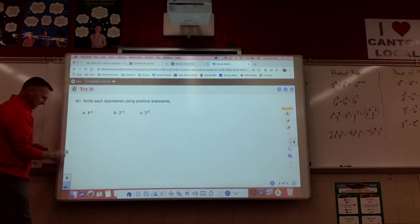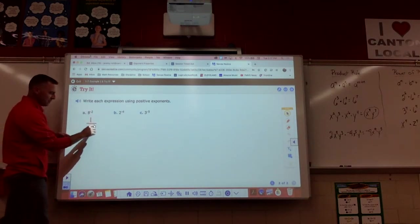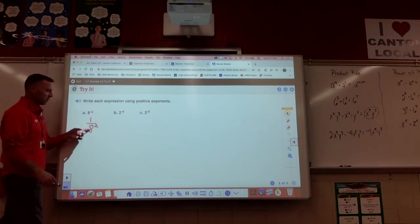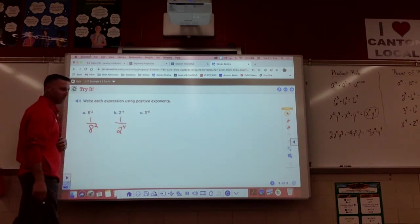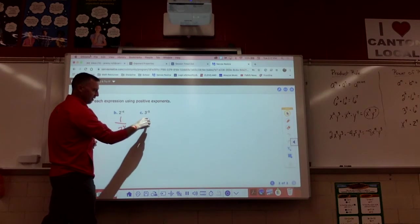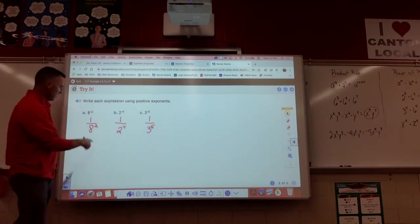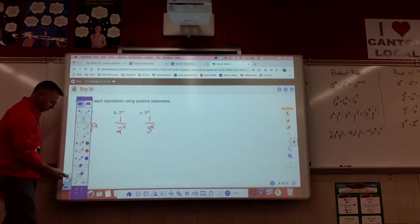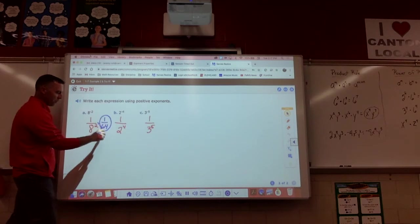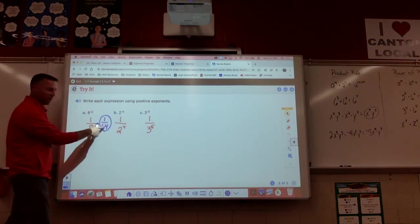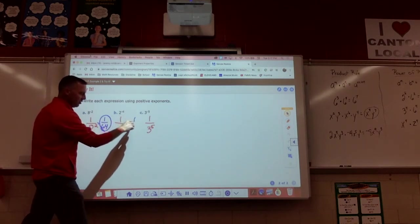Negative exponents. 8 to the negative second power, folks. Write it as a fraction, one. Keep the base as the denominator. Take the opposite of that exponent. One over eight to the second power. 2 to the negative fourth power, equivalent to one over two to the fourth power. C, three to the negative fifth, equivalent to one over three to the fifth. Now folks, we could take this one step further. One over eight to the second power, this is equivalent - we could also say it's equivalent to one over 64. Eight to the second power, eight times eight gives you a product of 64.